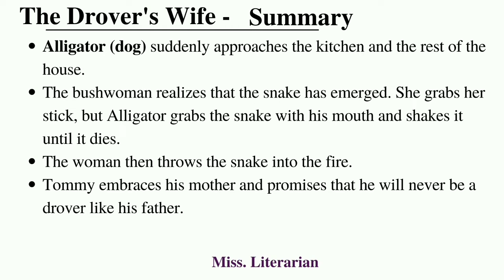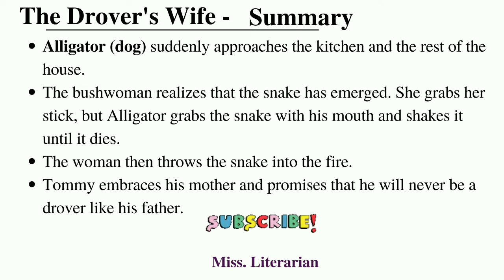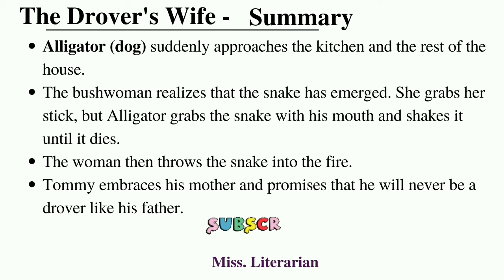She cries aloud but soon calms down. There was a partition between the kitchen and the rest of the house. Alligator, their dog, suddenly approaches the partition between the kitchen and the house, and the bush woman realizes the snake must have emerged. When she grabs her stick, the alligator gets there first, catches the snake, and shakes it until it dies. The bush woman then takes the snake from the dog's mouth, throws it, and puts the snake's remains into the fire. Tommy, her son, embraces her and promises her that he will never be a drover like his father.